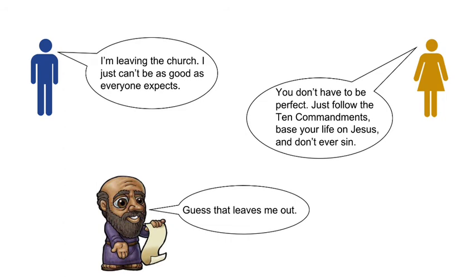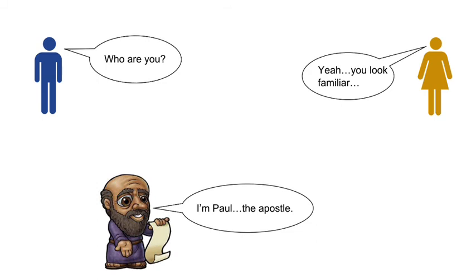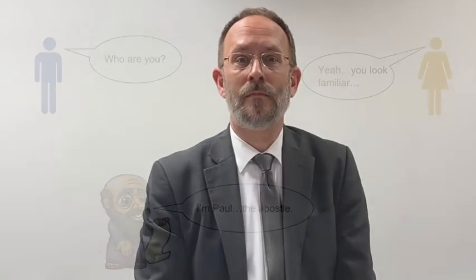The fellow holding the scroll says, 'Well, I guess that leaves me out.' The fellow in blue asks, 'Who are you?' The girl in gold says, 'Yeah, you look familiar.' And he says, 'I'm Paul, the apostle.' So we want to be very careful when making a distinction between two things that they really are, in fact, different — and that you haven't just restated the one thing in a different way.